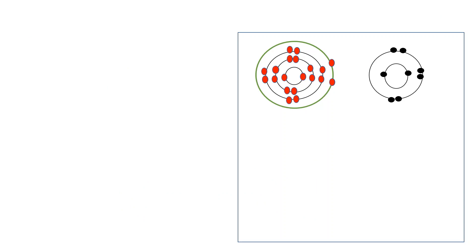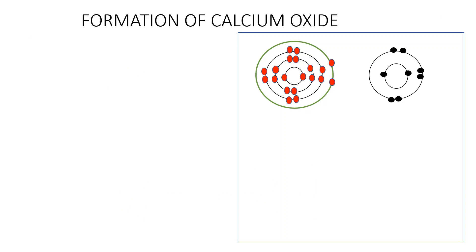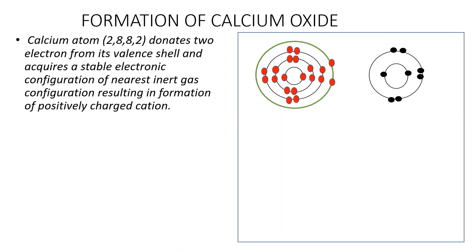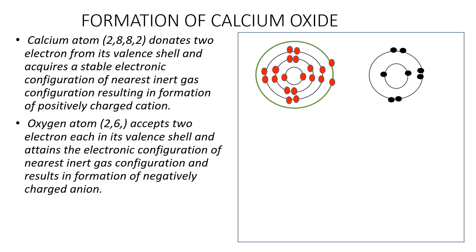The third example is the formation of calcium oxide. Calcium oxide is made up of one atom of calcium and one atom of oxygen. Calcium has got two electrons in its outermost shell and shows the tendency to lose these two electrons, attaining the stable electronic configuration of the nearest zero group, argon. Oxygen has six electrons in its outermost shell and gains the two electrons from the calcium atom, forming a negatively charged oxide ion and attaining the stable electronic configuration of the nearest zero group, neon.